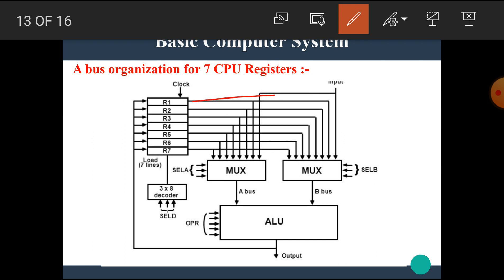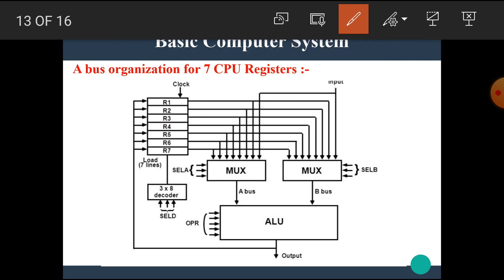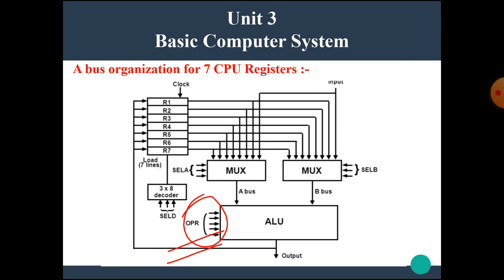All registers R1 through R7 are connected to both multiplexer A and multiplexer B. Which register is selected depends on the select lines. For example, if we want to select register R1 on multiplexer A, we give the combination 001. If we want to select R3 on multiplexer B, we give combination 011. The ALU unit has 5 operation input lines which decide the operation to be performed.